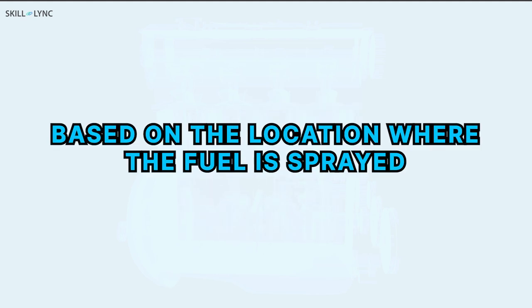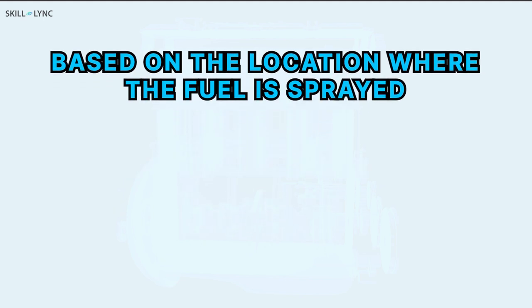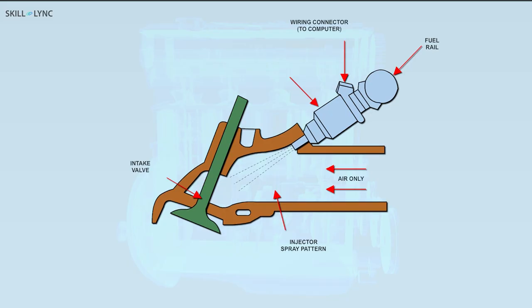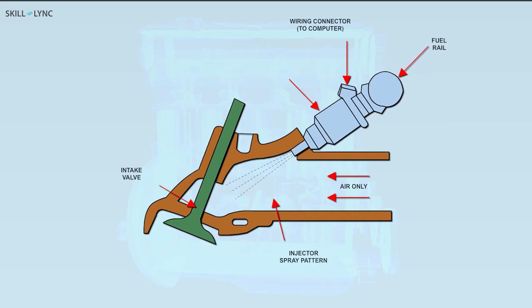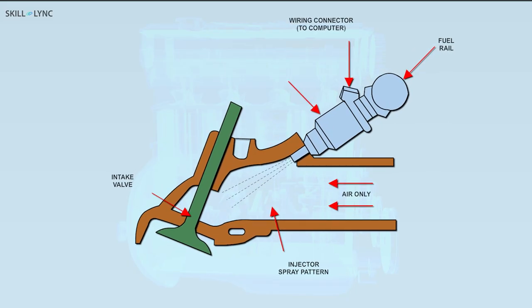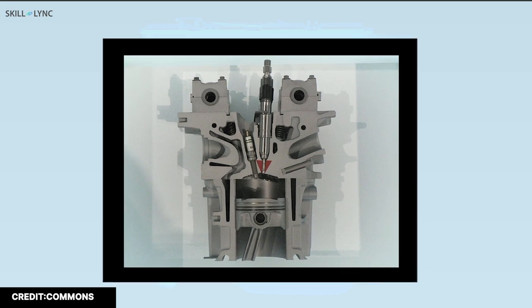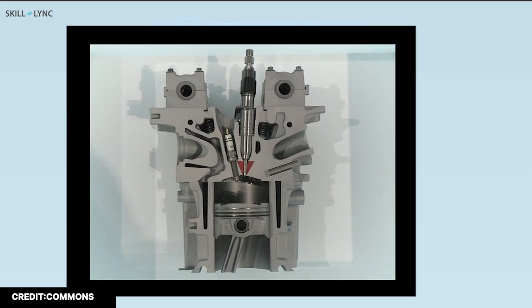Based on the location where fuel is sprayed, the fuel injection system can be further classified into two types: indirect injection system and a direct injection system. If the fuel is sprayed near the inlet port or near the inlet manifold, then it is called indirect fuel injection. If the fuel is sprayed directly into the engine cylinder, as in the diesel injection system, it is called direct fuel injection.